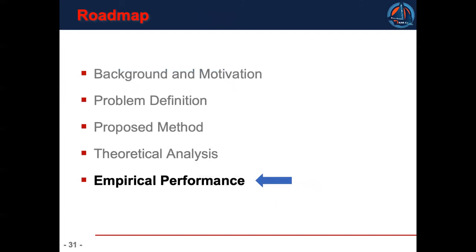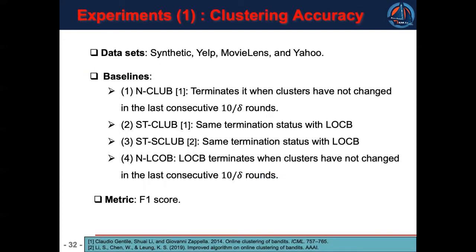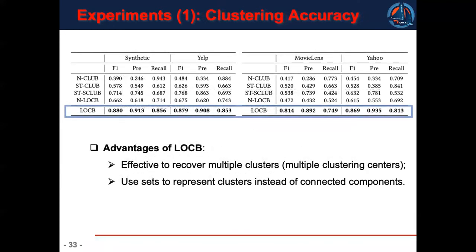The final part is the empirical performance. We evaluate LOCB from various aspects. The first aspect is its clustering accuracy. We use four data sets, including one synthetic and three real-world data sets. We design four baselines with different termination conditions. Here we use F1 score to evaluate the clustering accuracy. LOCB outperforms all baselines because of two advantages. First, LOCB uses seeds to more effectively recover multiple clusters. Second, LOCB uses sets to represent clusters instead of connected components to find overlapped clusters.